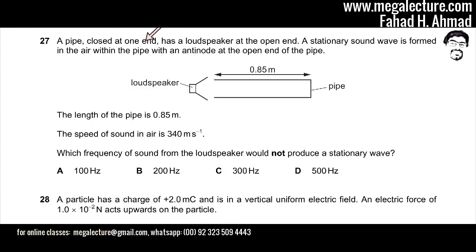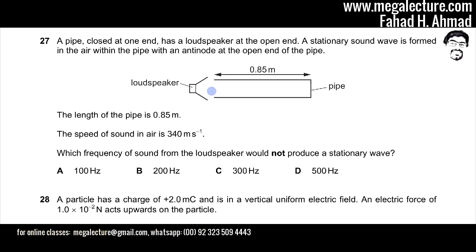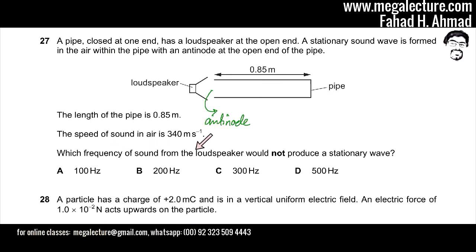The question states that a pipe is closed at one end and has a loudspeaker at the open end. The length of the pipe is 0.85 meters and the speed of sound in air is 340 meters per second. A stationary sound wave is formed in the air within the pipe, with an antinode at the open end. The question asks which frequency from the loudspeaker would NOT produce a stationary wave.